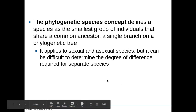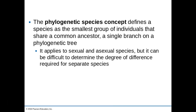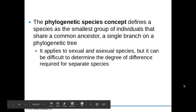The phylogenetic species concept defines a species as the smallest group of individuals that share a common ancestor — a single branch on a phylogenetic tree, which is like the family tree of organisms. This works for both sexual and asexual species. However, constructing these trees can be difficult, and it raises the question: how different do organisms need to be in order to be considered a different species? That's the end of section 22.1.